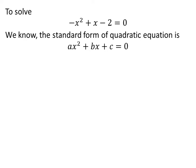We know the standard form of a quadratic equation is a times square of x plus b times x plus c is equal to 0. Here, a, b and c are constants.